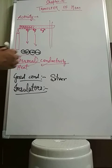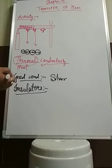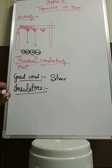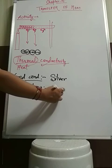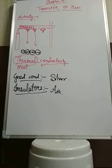Non-conductors of heat are actually good insulators. Examples of bad conductors include wool, felt, fur, feathers, polystyrene foam, and fiberglass. Air is also a bad conductor of heat, or we can say it is a good insulator.